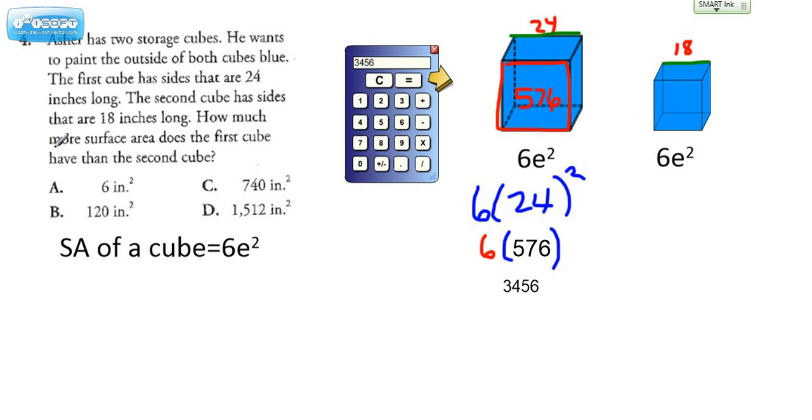Now it does say how much more surface area. So one of them is going to be a bigger number than the other. You're going to subtract those two values, so you'll come up with some number here, subtract it from this, and your answer will be whatever the difference of those two numbers is, and it'll be one of these choices.